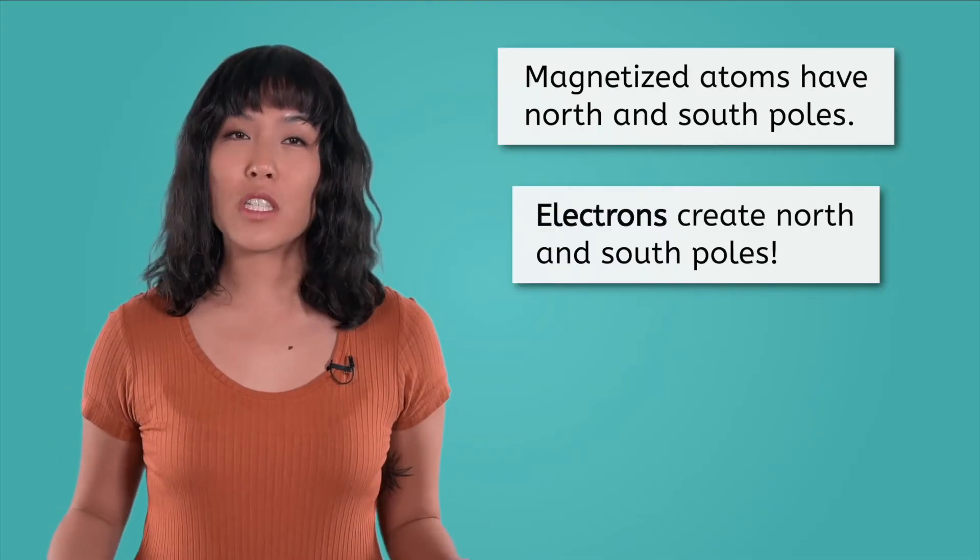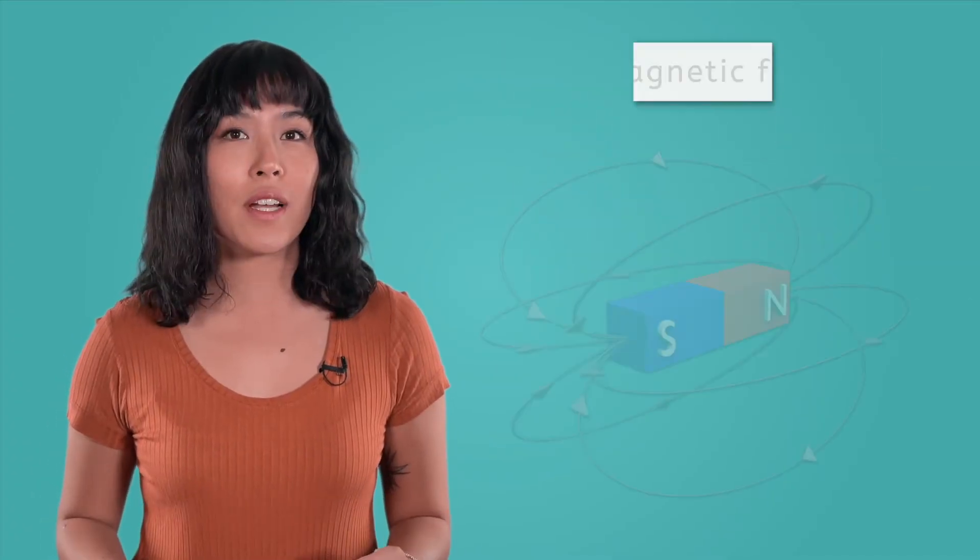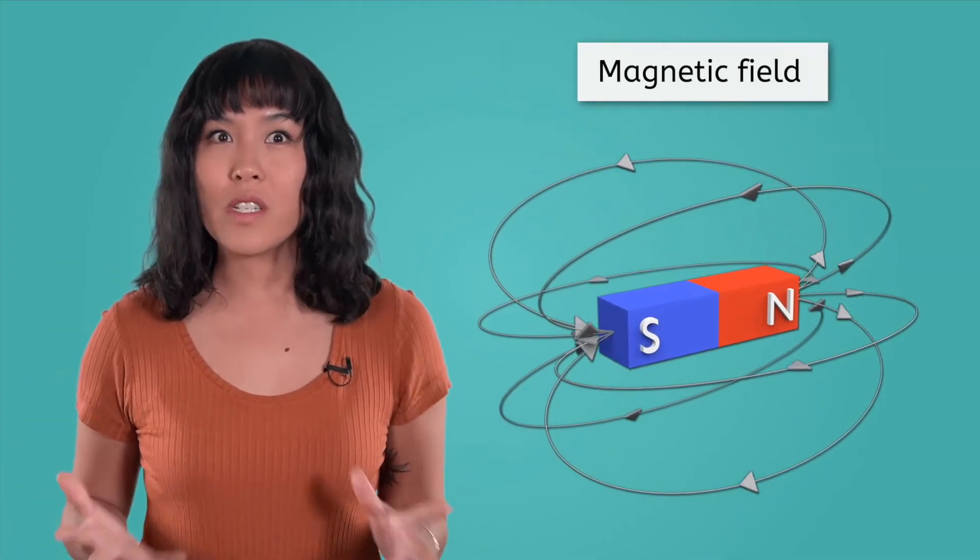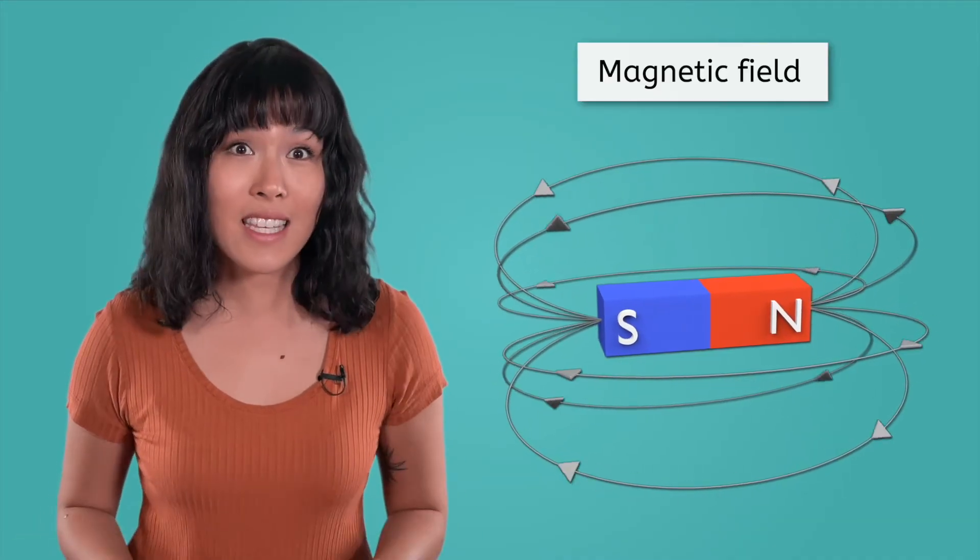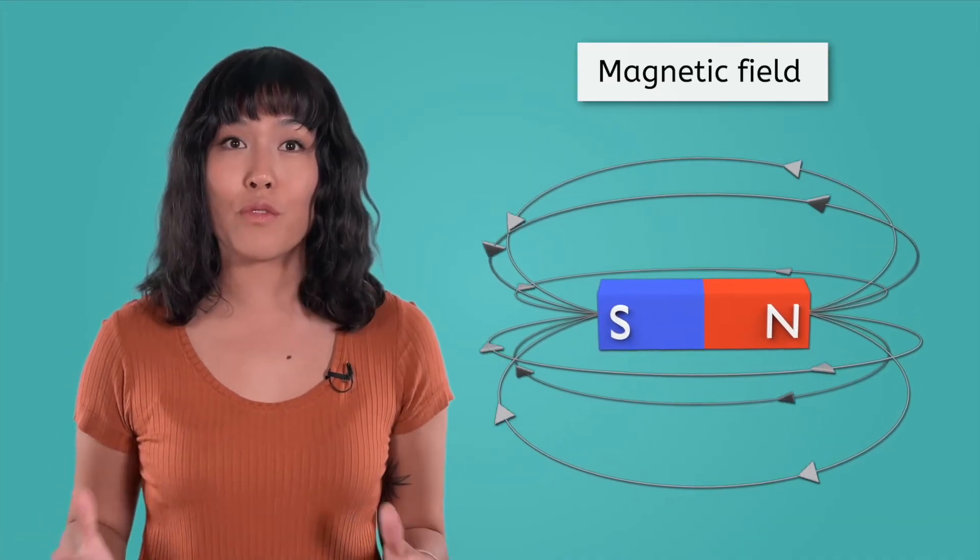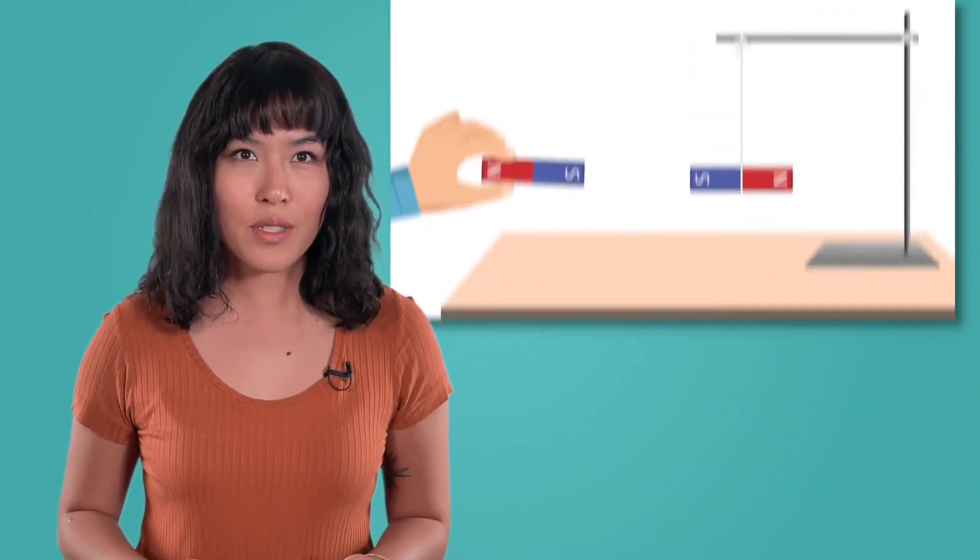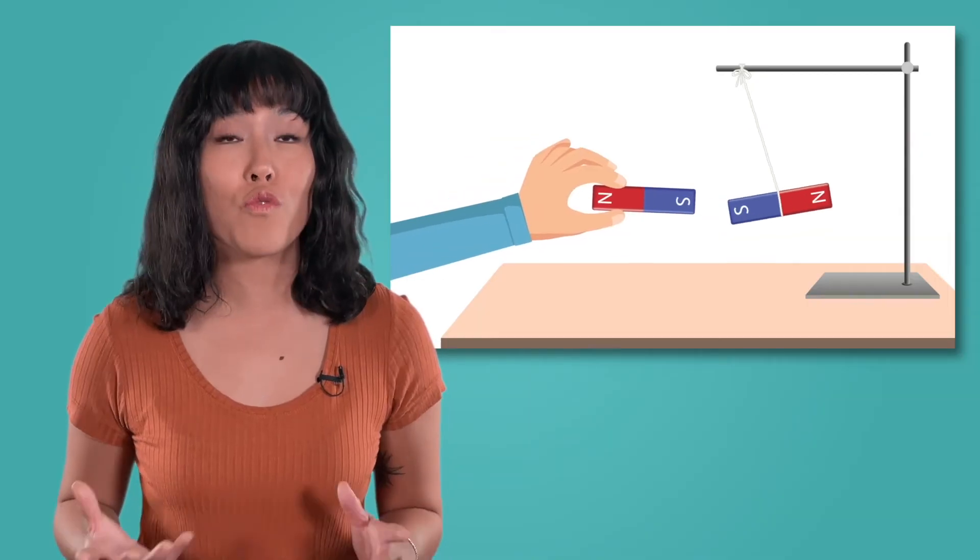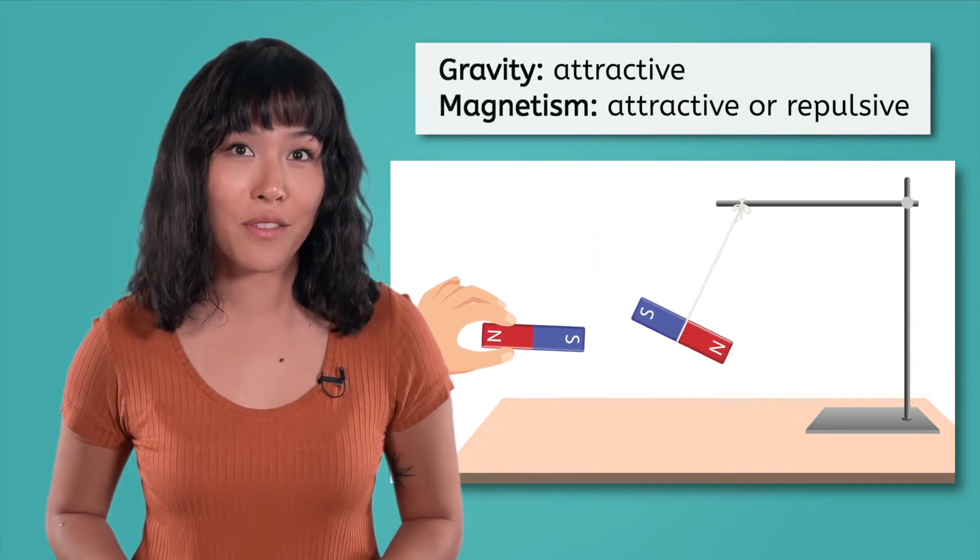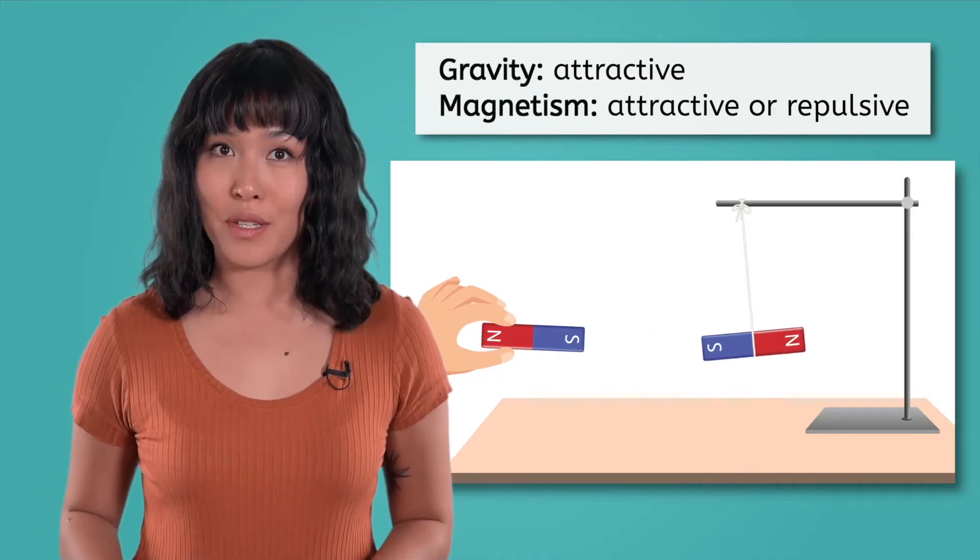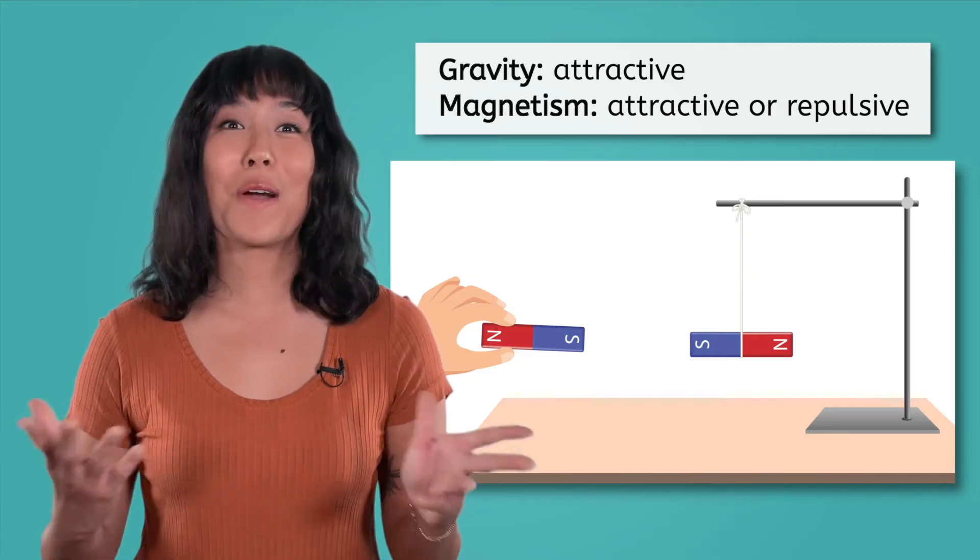When the electrons behave in a way that creates a north and south pole on an atom, the atom generates a magnetic field, which is similar to a gravitational field. Any object within this field will experience a force from the magnet. However, unlike gravitational fields, magnetic fields can either attract or repel objects. Meanwhile, gravity is always an attractive force, never repulsive. We'll learn more about how magnetic fields are created as we go through this unit.